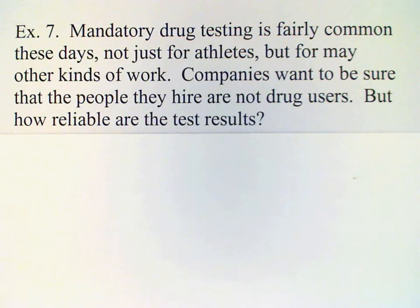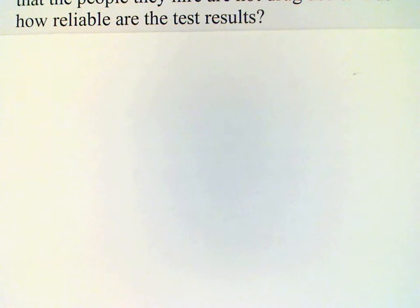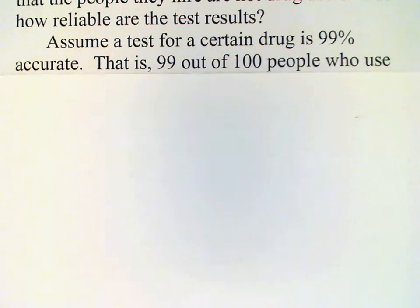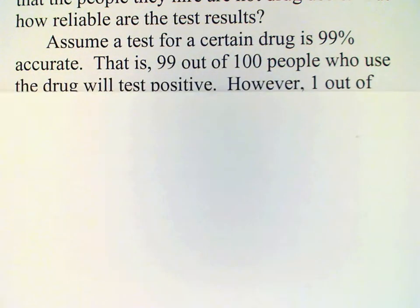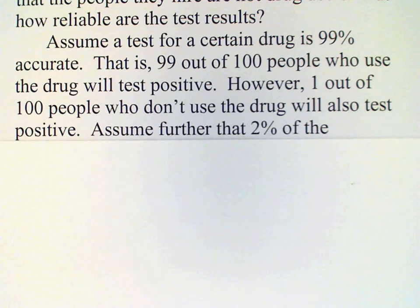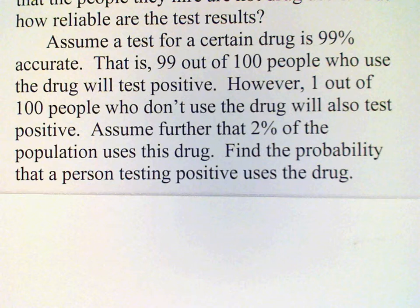Let's look at some typical figures and see what conclusions we can draw by doing the analysis. Let's assume that a test for a certain drug is 99% accurate. This means that 99 out of 100 people who use the drug will test positive. However, there is that one person out of 100 who doesn't use the drug who will also test positive. Let's make the further assumption that 2% of the population uses this drug.